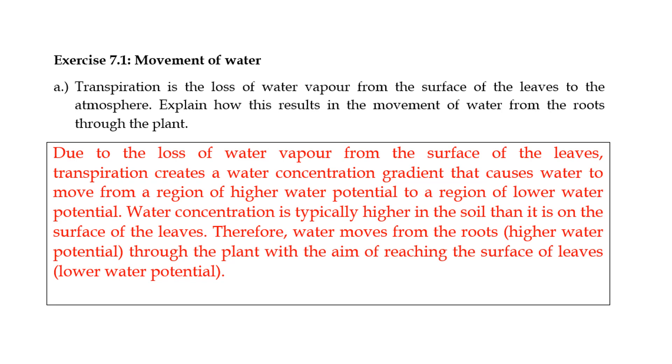So when water is lost in form of water vapor from the surface of the leaves, it creates a water concentration gradient. So in other words, the water vapor concentration on the leaf surface becomes lower than the water concentration in the roots. And that then causes water to move from a region of high water potential to a region of low water potential as it would during osmosis. And that is what causes the movement of water basically.